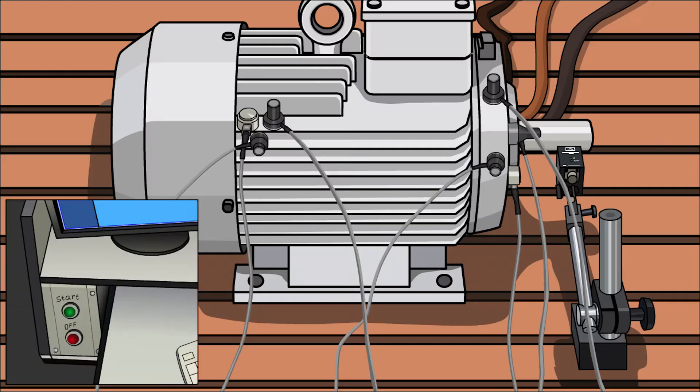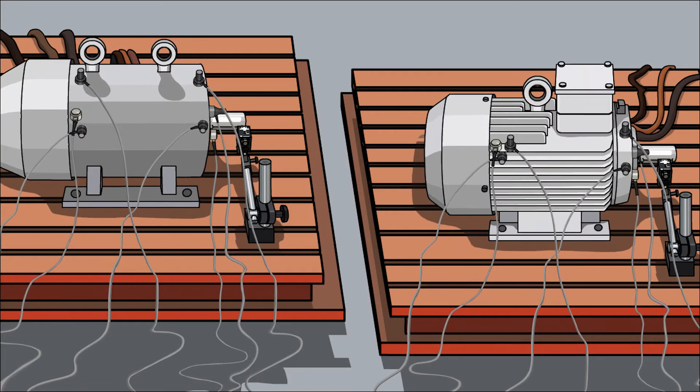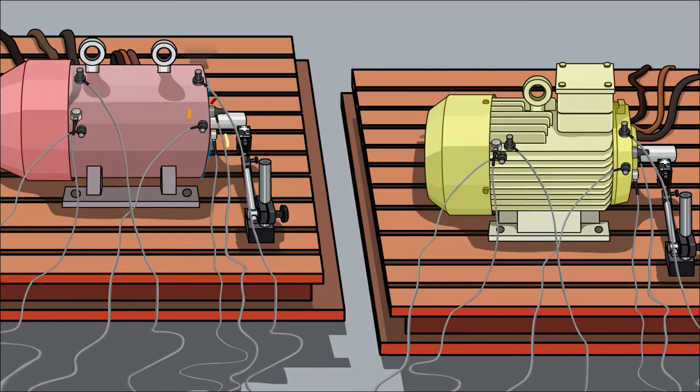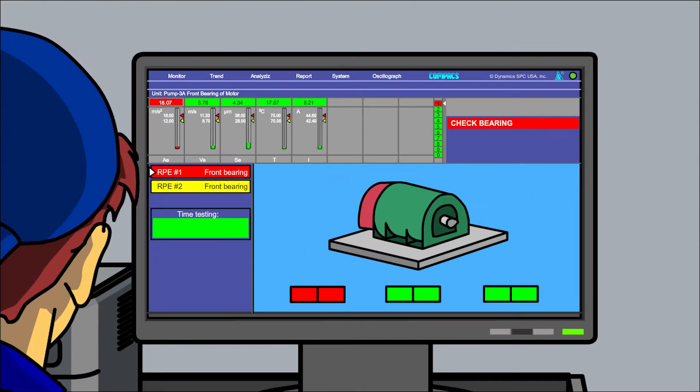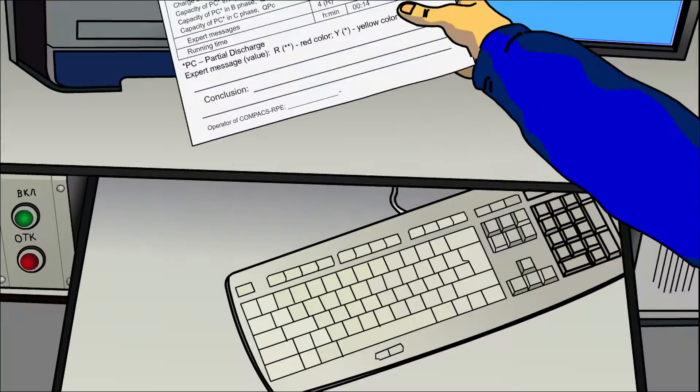After the start button has been pressed, a reduced current start of the electric motor is performed. Upon detecting any defects, the system COMPAX RPE issues an automatic expert prescription and prints a test report.